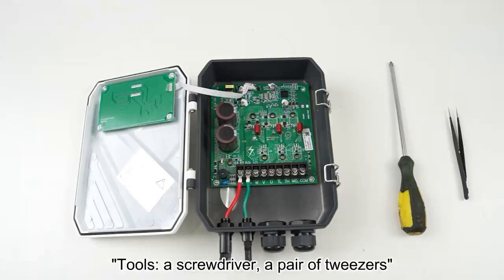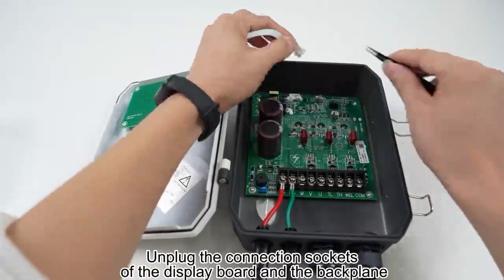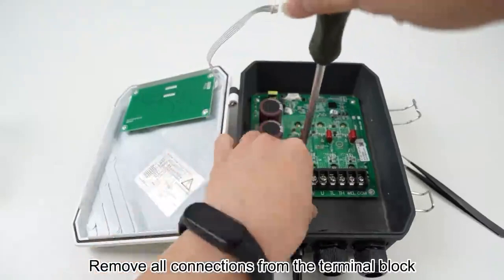Tools: a screwdriver and a pair of tweezers. Unplug the connection sockets of the display board and the backplane. Remove all connections from the terminal block.